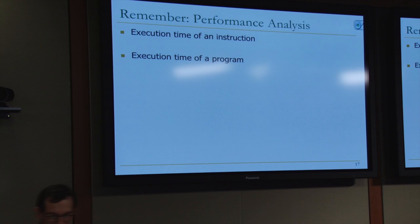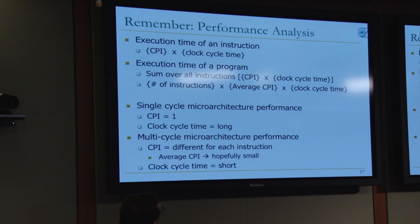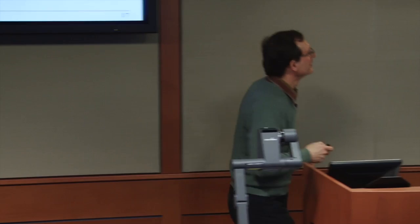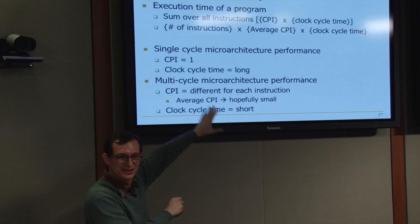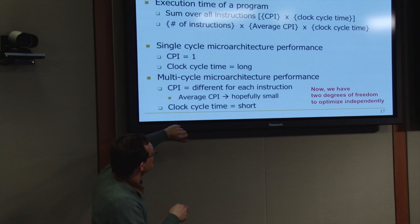Performance analysis: in a single-cycle microarchitecture, CPI is always one regardless of the instruction, and clock cycle time is long as a result. In a multi-cycle microarchitecture, CPI is different for each instruction. Average CPI is hopefully small because you optimize such that instructions encountered more often take fewer clock cycles. You can reduce the clock cycle time compared to single-cycle, and you have two degrees of freedom to optimize, which is really nice.